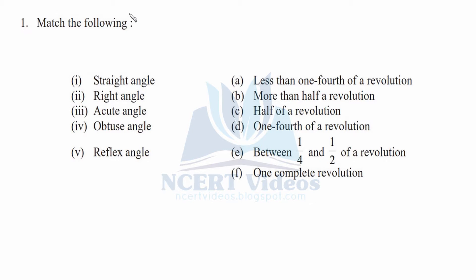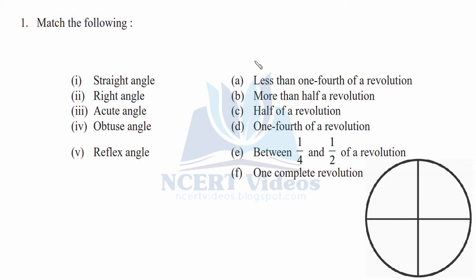Question 1: match the following, from 1 to 5 we have to match with a to f. Here we use a circle for reference — all calculations are done on a circle first. Less than one fourth of a revolution is less than 90 degrees, so it is called an acute angle. More than half a revolution but less than three fourths of a revolution is called a reflex angle, so we match b with v — that is reflex angle.